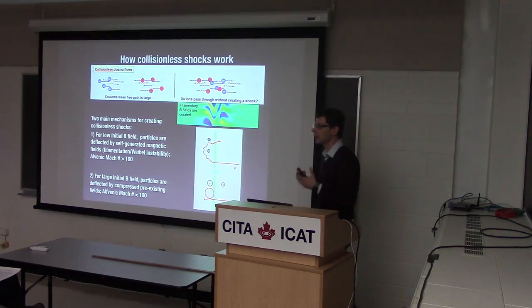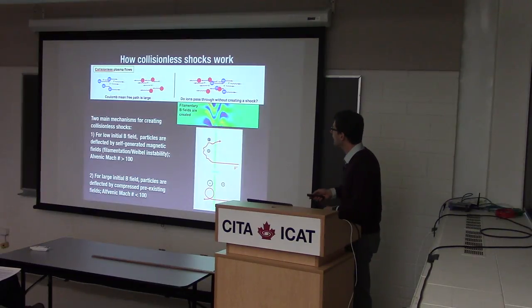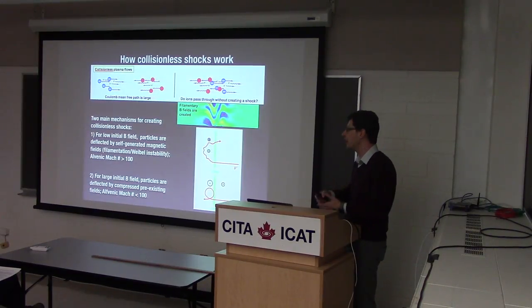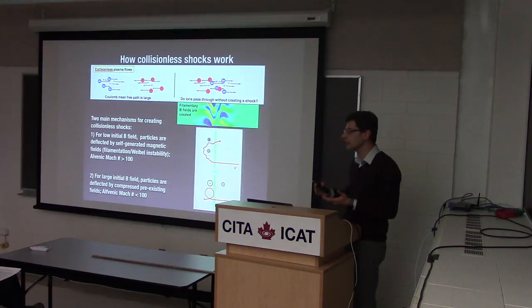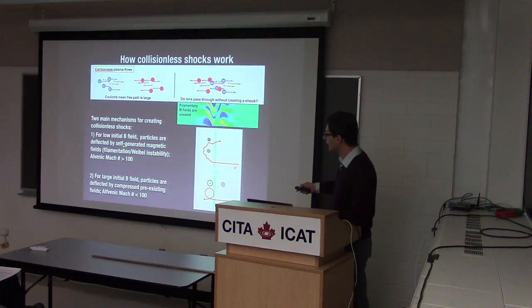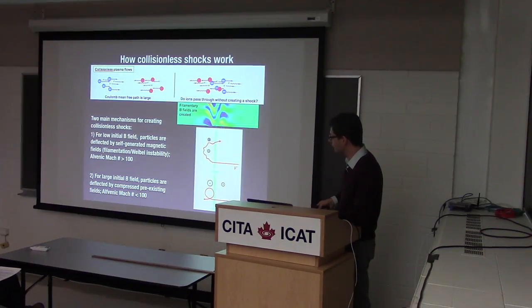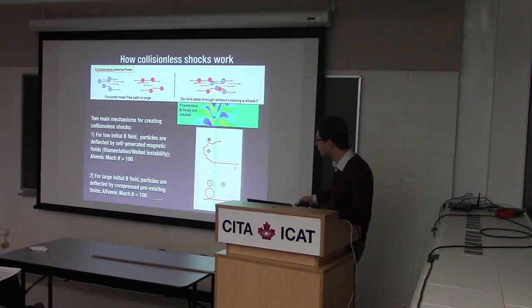There is free energy, so plasma will find a way to tap it. Indeed there are instabilities that arise from counter-streaming flows. Those instabilities create randomly-looking magnetic fields that scatter particles and slow them down, creating compression. So without an initial magnetic field, you create a shock on self-generated magnetic fields, and particles meander in this turbulent field.